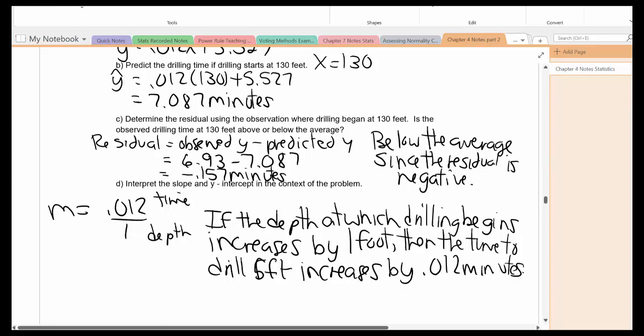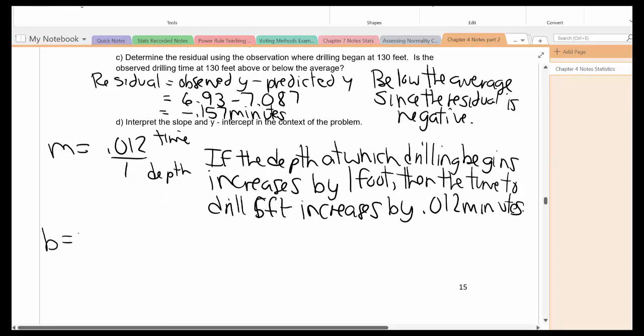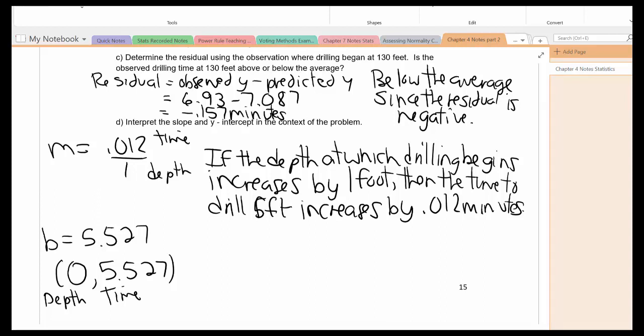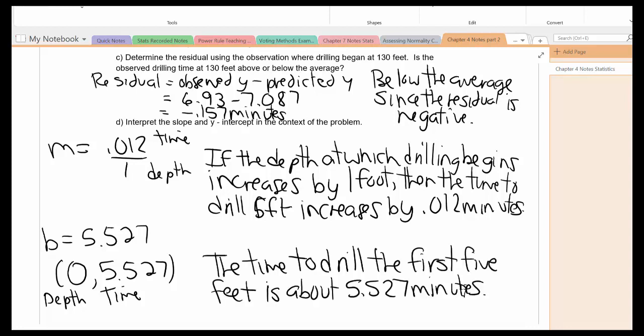So again, I'm talking about the two different things in this problem. The depth at which drilling begins, and the time to drill five feet, using the appropriate units of measurement. In this case, feet and minutes. The y-intercept, we know is this. If you recall, as an ordered pair, that would be x is 0, and whatever the y-value is going to be. Well, remember, the x is depth, and the y is time. So in other words, when we drill the very first five feet, it'll take about 5.527 minutes. So the time to drill the first five feet is about 5.527 minutes. Again, I'm talking about time to drill in feet, and how long it takes in minutes.